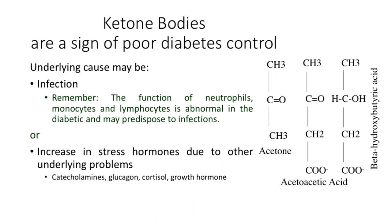When an animal that had been previously stable becomes destabilized, an infection can be a stimulus for the alteration of insulin resistance. This is because you can have an abnormality of neutrophil function, white monocyte and lymphocyte function in diabetes, and the animal is prone to infection because of the elevated glucose. The other possibility is that you can have an increase in stress hormones like glucagon, corticosteroids, growth hormone that will lead to an enhancement of insulin resistance and lead the animal to be out of diabetic control.